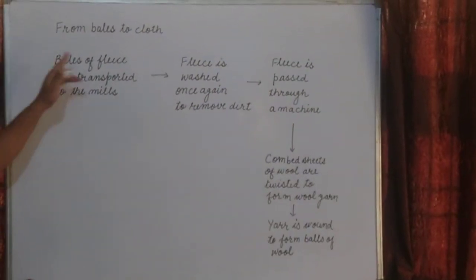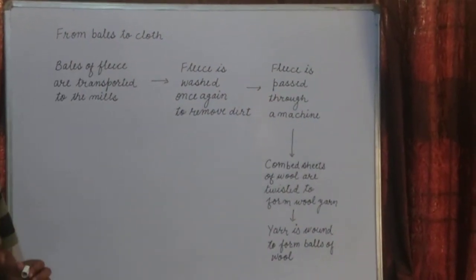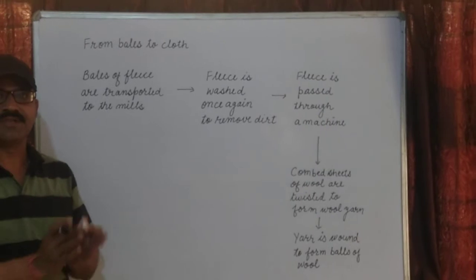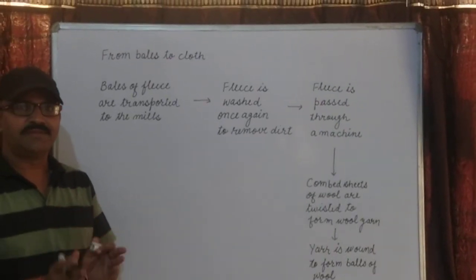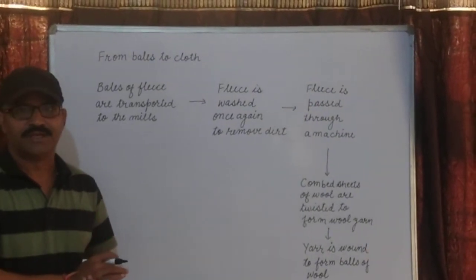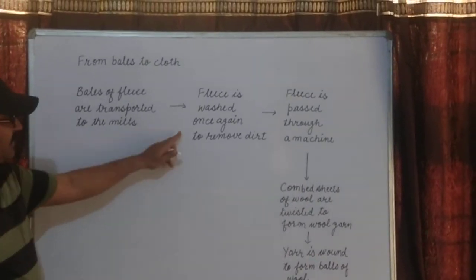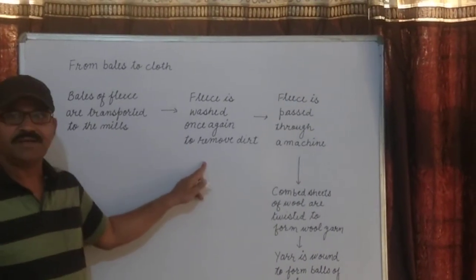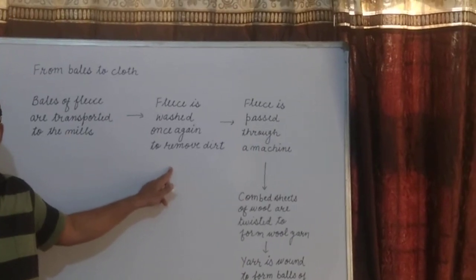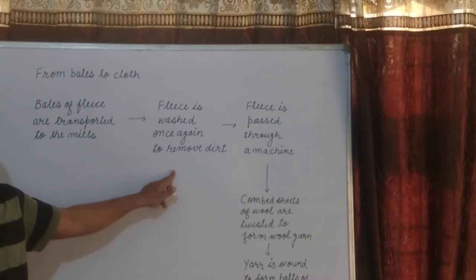These are the steps from fleece to cloth. In the mills, the wool fiber is made into yarn and then made into fabric. The bales of wool are washed once again to remove dirt. Then, they are passed through a machine.